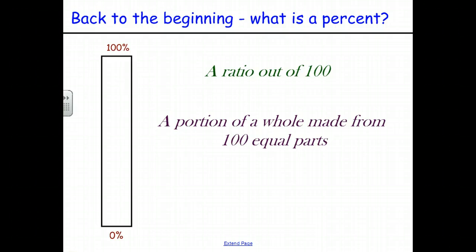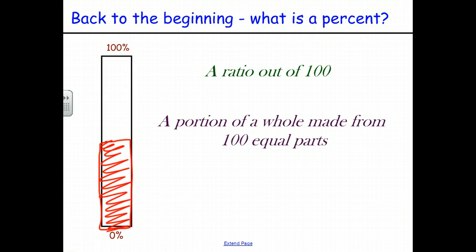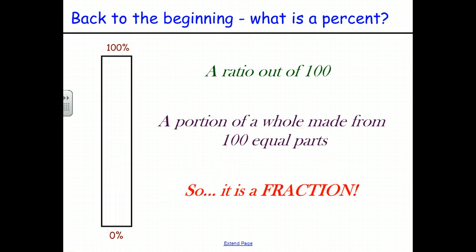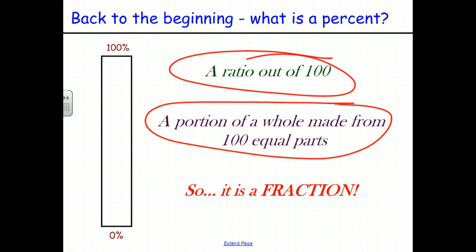The second half is that when we use bars to solve percentage problems, we can see that the percent represents some portion of the whole bar that's been colored in. That 50% is a portion of the whole made up from 100 equal parts — 50% takes 50 of those 100 equal parts. And so in this sense, we can see it's a fraction.